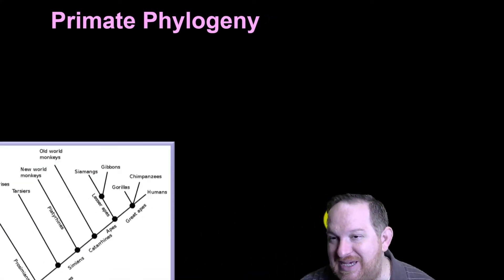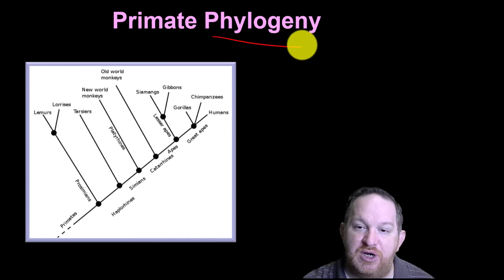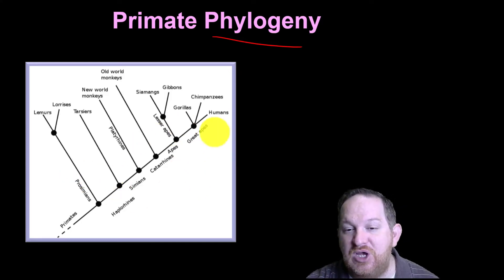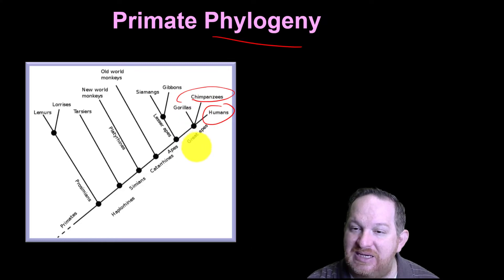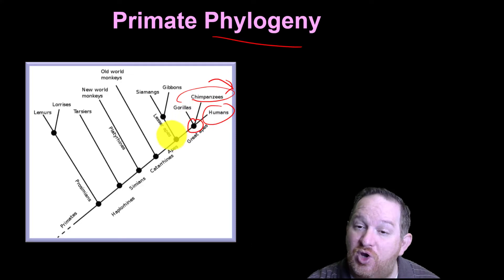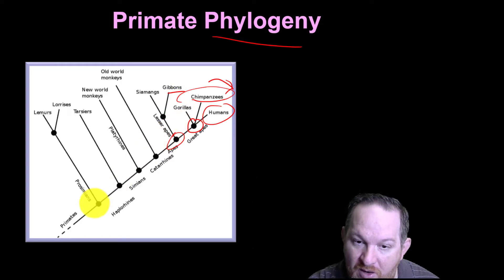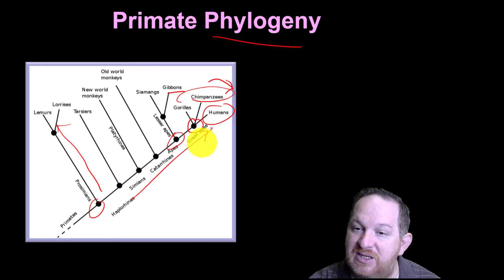One way to show phylogeny — the evolutionary history — is to use these trees. This is what we might call a primate phylogeny. Humans share a common ancestor with chimpanzees, one of the great apes. We didn't evolve from modern-day chimpanzees, but we share an ancestor — the same ancestor that gorillas shared as well. If you go back a little further, we also have a common ancestor with gibbons, the lesser apes. And if you go really far back, we share a common ancestor with lemurs. Lemurs don't look anything like us, but they did their own evolving just like we did.